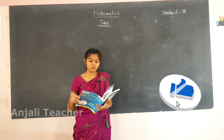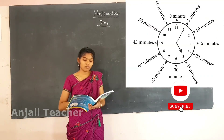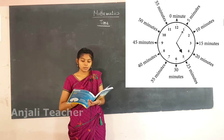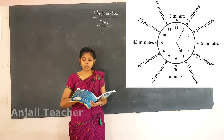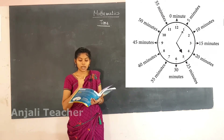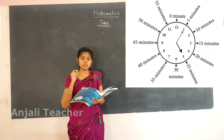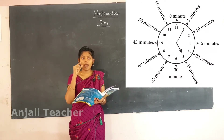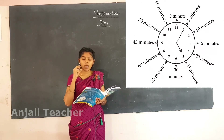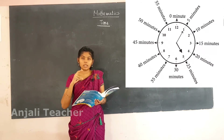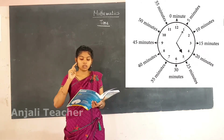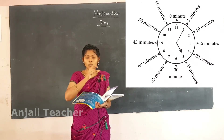Reading time to the nearest 5 minutes. See the picture given here. Tarunjit's mother helps him read the time on the clock correctly. The 12 on the clock means it is 0 minutes. There are 12 numbers and 2 hands on the clock. The shortest hand shows the hour hand and the long hand shows the minute hand. When the minute hand is at 12, it is 0 minutes.